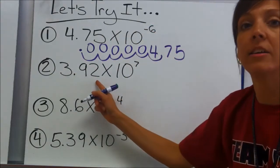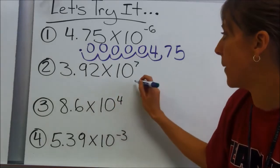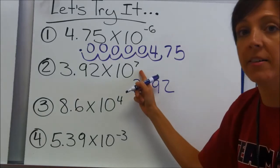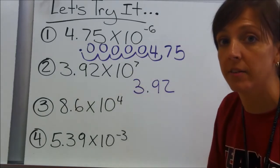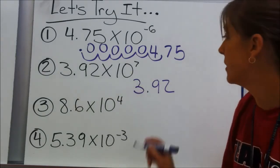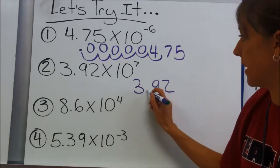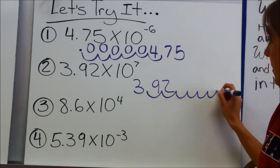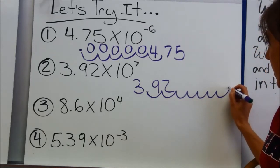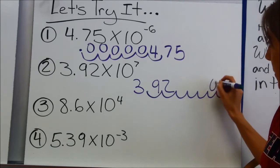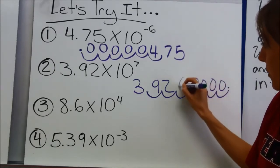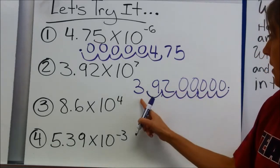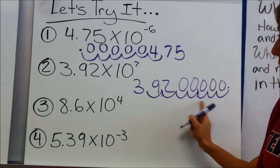Next example: 3 and 92 hundredths times 10 to the seventh power. I'm going to write my decimal number down. This time I have a positive exponent, so I'm going to move in a positive direction, which would be to the right, 7 places: 1, 2, 3, 4, 5, 6, 7. Put my decimal there, fill in the place value spots with 0's, put commas in where they are needed, and I have 39,200,000.